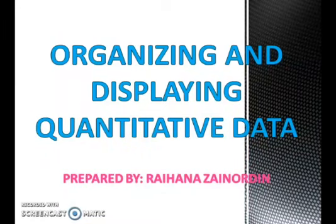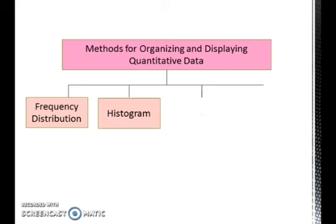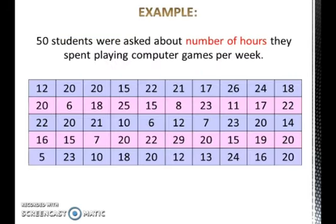Organizing and Displaying Quantitative Data. Quantitative data can be organized into a frequency distribution and can be displayed by using a histogram, frequency polygon, and ogive. Consider this example: 50 students were asked about the number of hours they spend playing computer games per week. The data obtained is quantitative raw data.